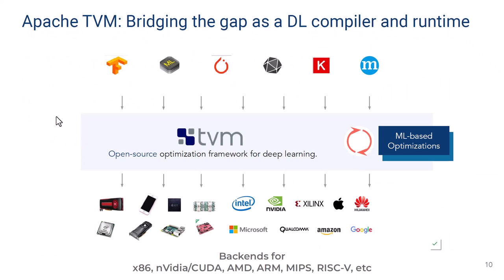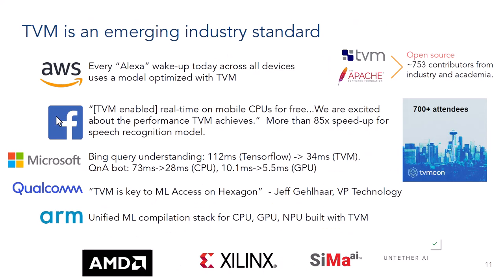For that, I present Apache TVM, which is an open source deep learning compiler. TVM accepts models defined in popular machine learning framework formats and translates them to work on a wide variety of hardware — from data center GPUs and CPUs all the way down to the TinyML-style SoCs we motivated at the beginning of this talk. TVM has been around for about five years, used by big industry players, with over 750 contributors and over 700 attendees at our recent TVM user conference.